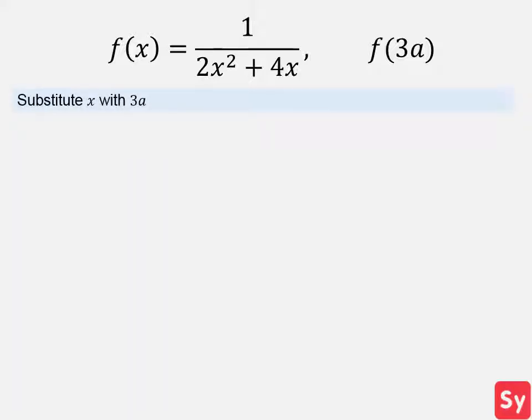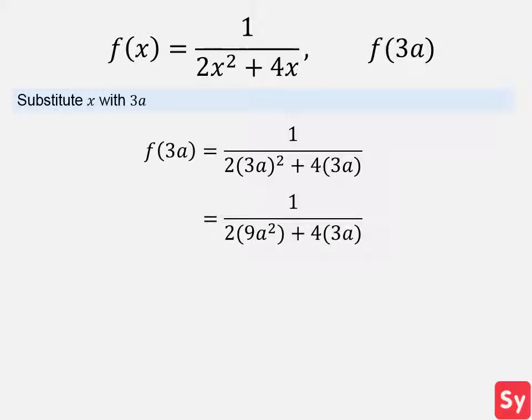First, we substitute our argument, 3a, in for x. Now we simplify. We square 3a, then we multiply and get our answer, 1 over 18a squared plus 12a, which is our answer.